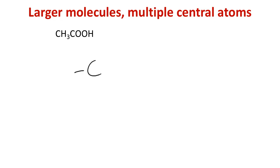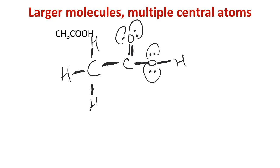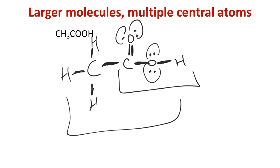Some molecules have multiple central atoms, like acetic acid (CH3CO2H). Rather than a linear sequence, one O forms a double bond with carbon (like CO2, with two lone pairs), and the other O connects with an H on one side (with two bonds and two lone pairs). Carbon forms with four bonds, oxygen tends to form with two bonds and two lone pairs, and H forms just one bond. This group is the carboxylic acid group — a very common acidic group in organic compounds.